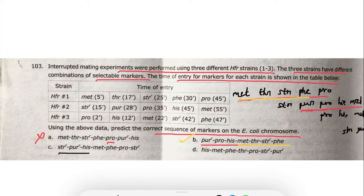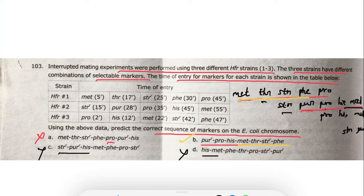Option C shows streptomycin then pyromycin then histidine — but the data shows streptomycin then pyromycin then proline, so option C is wrong. Option D shows histidine then methionine — histidine and methionine are present, but after methionine it should be threonine, not phenylalanine. So option D is also incorrect.